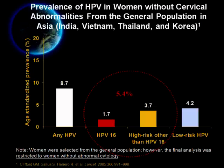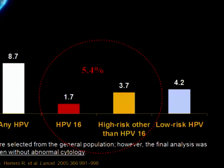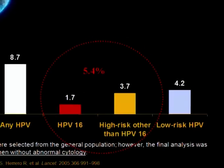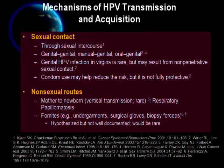What is the prevalence of HPV infection in Asia? HPV infection varies greatly across populations. This graph shows the prevalence of HPV infection among the general population in Asia, based on HPV testing on cervical smear using the PCR method. Results show the age-standardized prevalence of any HPV infection was 8.7%, while the prevalence of high-risk HPV infection was 5.4%.